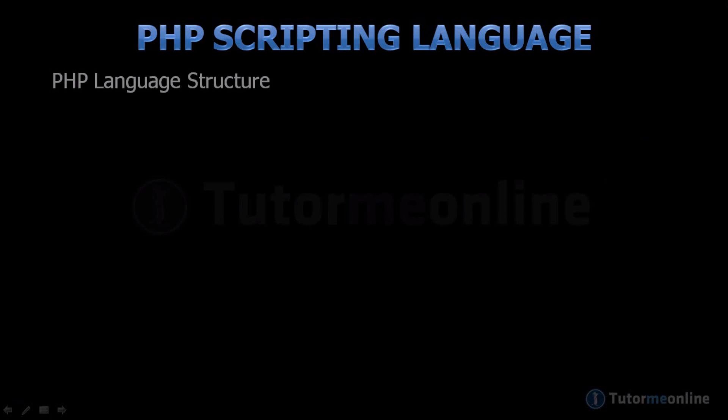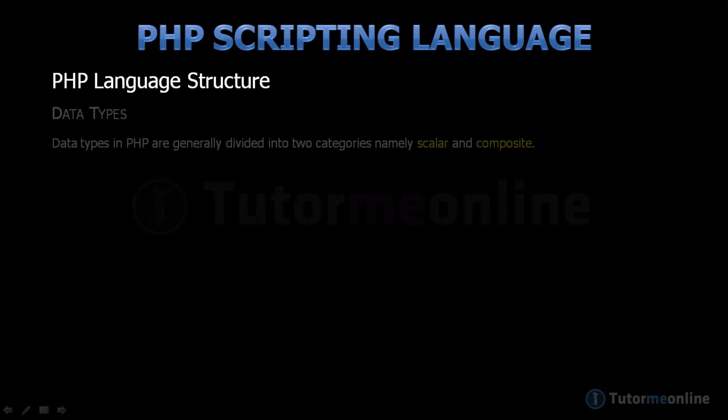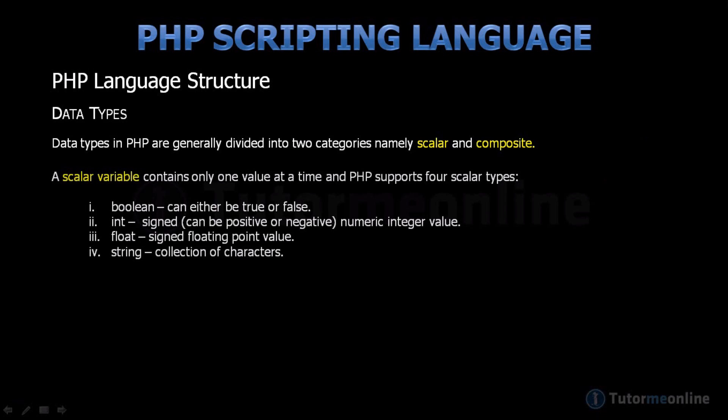The PHP language structure. Data types in PHP are generally divided into two categories, namely scalar and composite. A scalar variable contains only one value at a time, and PHP supports four scalar types.